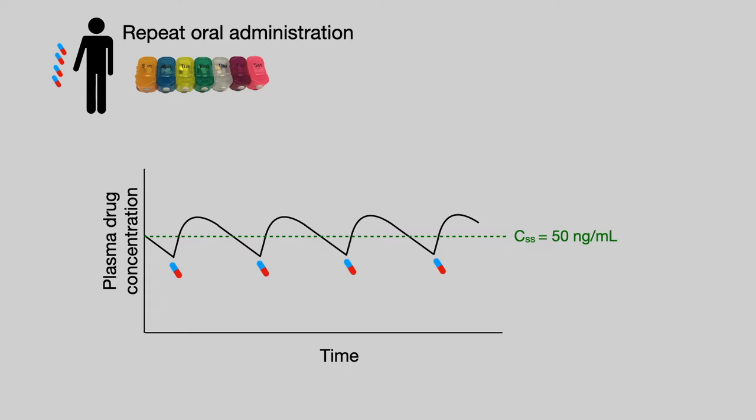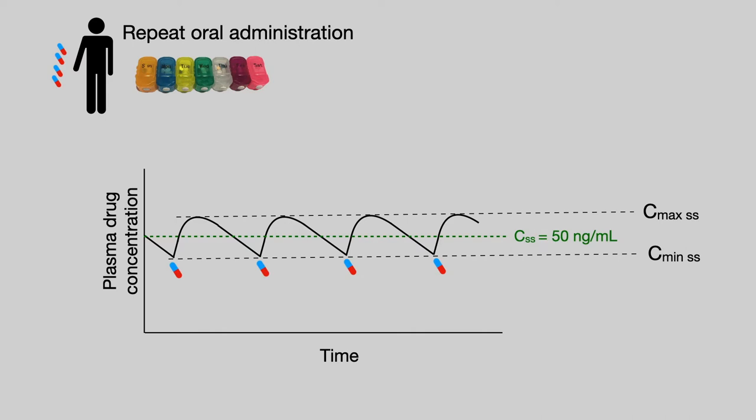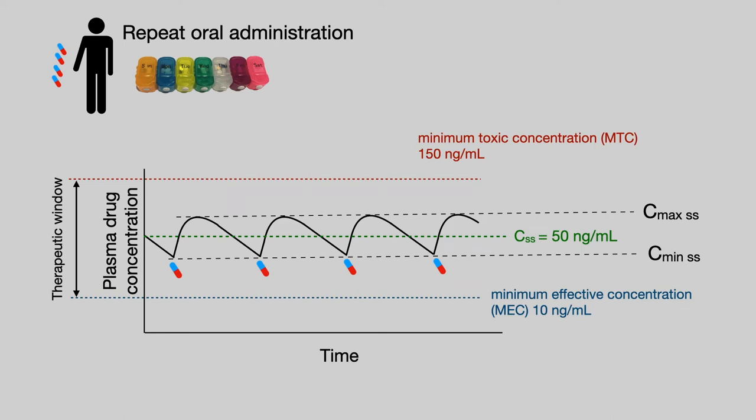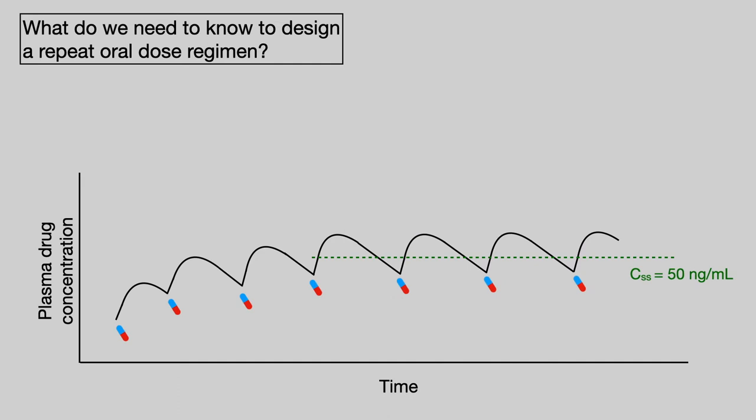With continuous oral administration, we end up with a cycle of rising and falling drug concentration. The drug will reach some maximum concentration called C-max at steady state, and some minimum concentration called C-min at steady state. The C-max should not exceed the MTC, and the C-min should not go below the MEC. Given this, how do we design a repeat dose regimen?